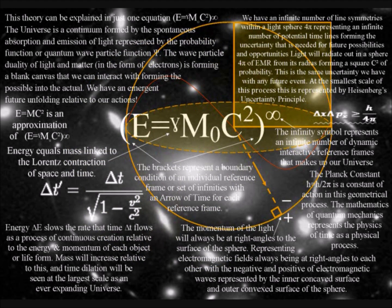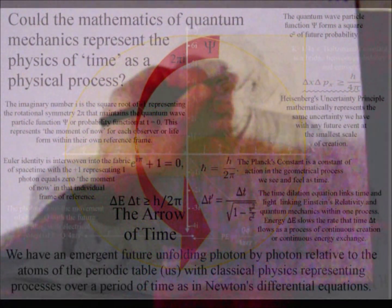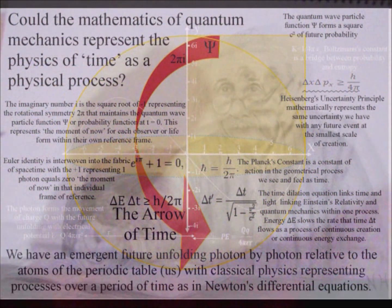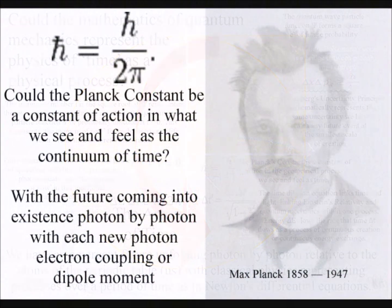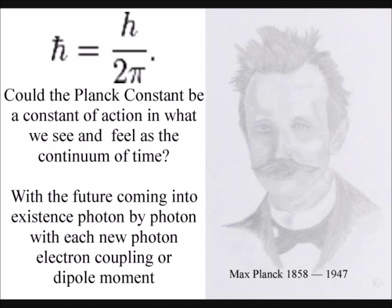This only makes sense if we think of the universe as a continuum formed by the spontaneous absorption and emission of light continuously interacting with the atoms of the periodic table. The wave-particle duality continuously forms a blank canvas that the atoms can interact with, forming the possible into the actual. We have an emergent uncertain future relative to the energy and momentum of our own actions. To understand this, we need to know why we square the amplitude to get the probability in the quantum wave-particle function of quantum mechanics.